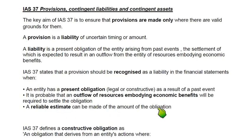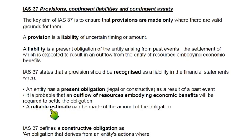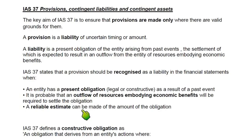The third condition is that a reliable estimate can be made of the obligation. If we have a present obligation and need to pay someone, there should be a reliable estimate of the amount. IAS 37 states that if all three conditions are met, we need to recognize the provision as a liability in the statement of financial position.